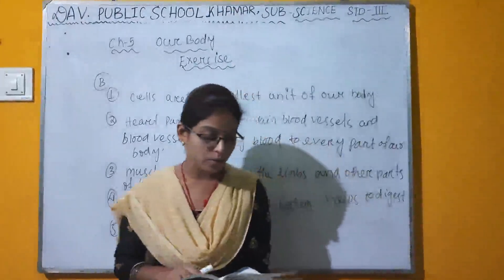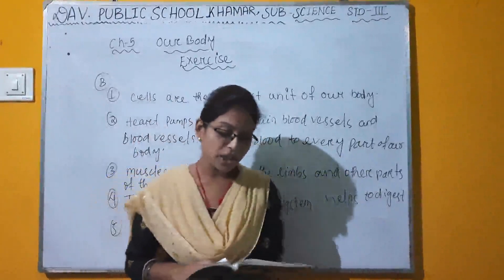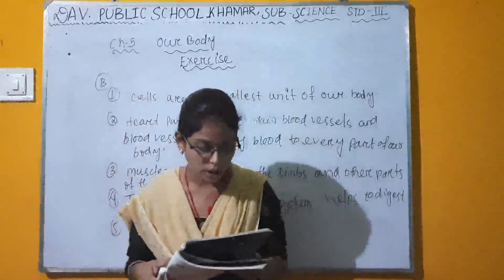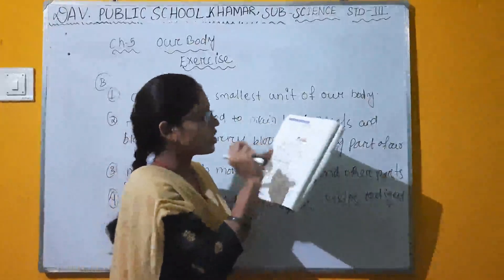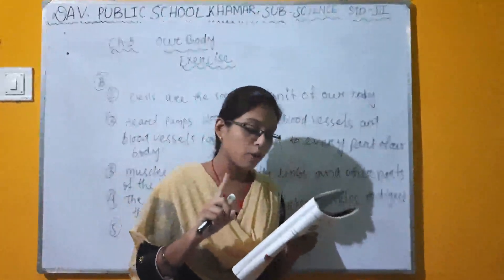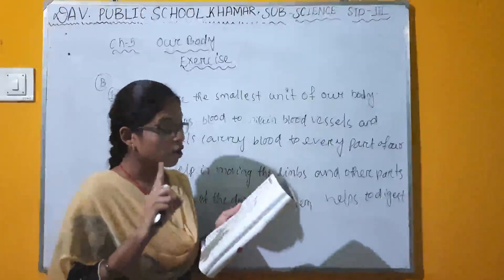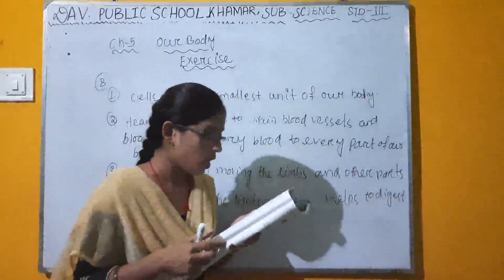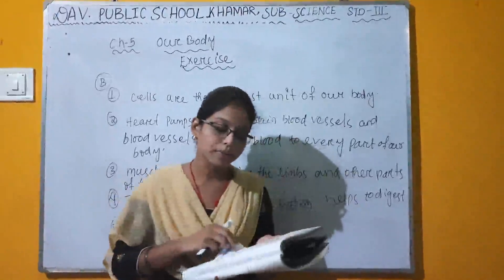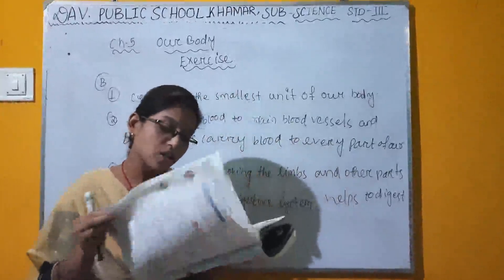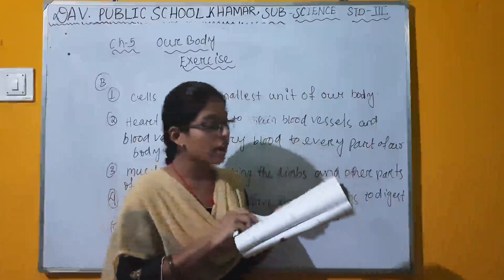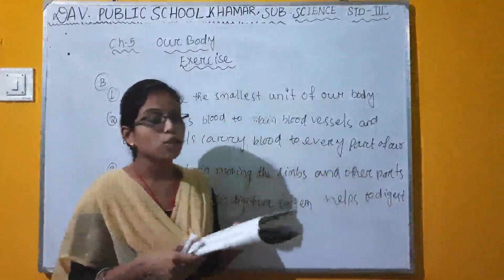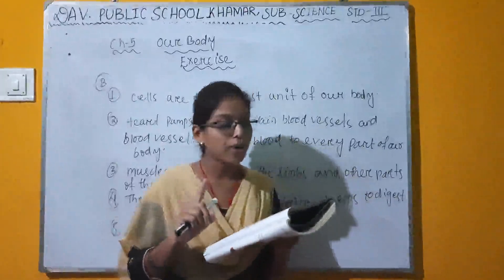Now we discuss the section: correct the following sentence by changing the underlined word. The building blocks of the human body — the correct answer is cells. Many cells join to form a tissue, and many organs join to form an organ system.